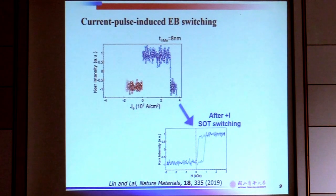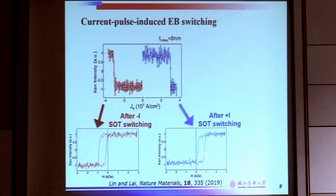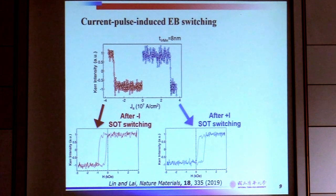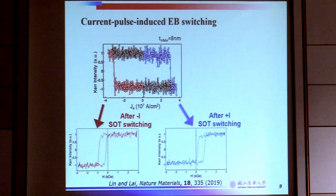If we apply a negative current, we can again see the exchange bias loop shift from positive to negative. If the current direction is not the right direction, in fact we don't see any change at all — just like in the typical ferromagnetic switching case.